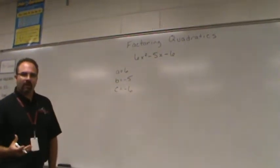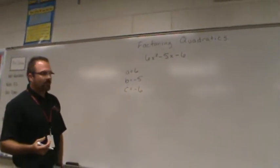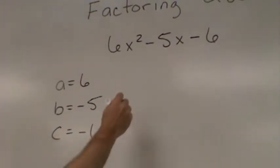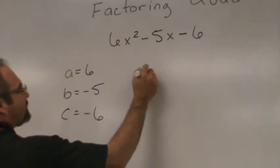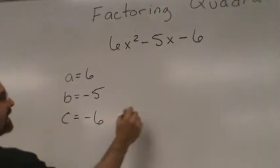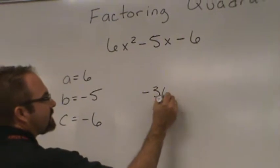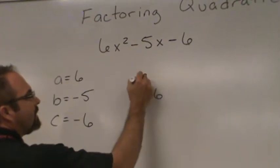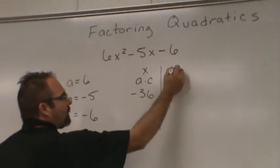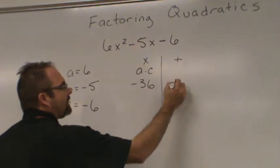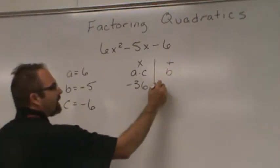Step 1 in solving this equation is going to be multiplying A times C. So A times C: 6 times negative 6 gives us negative 36. And we want to know what B is — in this case, B is negative 5.